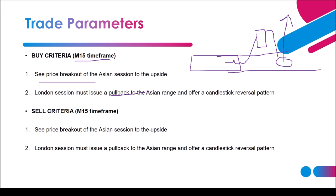For sell criteria, we need price to break down to the downside. We have the Asian range and we need price to go down. Then after the session changeover period, we need to see price going back to the Asian range, which offers a candlestick reversal pattern for a possible move downward.